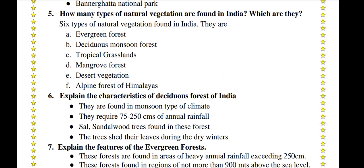How many types of natural vegetation are found in India and what are they? Evergreen forests, deciduous monsoon forests, tropical grasslands, mangrove forests, desert vegetation, and alpine forests of the Himalayas.